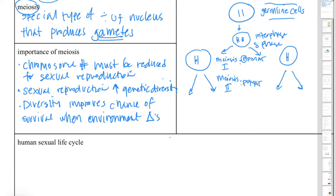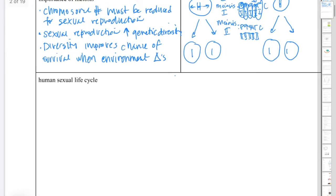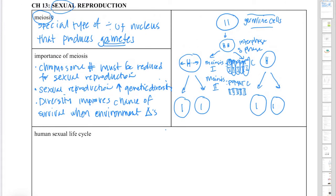Then the cells need to divide again in meiosis II. In meiosis II we have PPMAT again, but this time it tears apart the sister chromatids, just like in mitosis. So at the end we have four cells. Because we use the term PPMAT for both divisions, we use Roman numerals: during meiosis I we have prophase I, prometaphase I, metaphase I, anaphase I, and telophase I. During meiosis II we have prophase II, prometaphase II, metaphase II, anaphase II, telophase II, and cytokinesis.